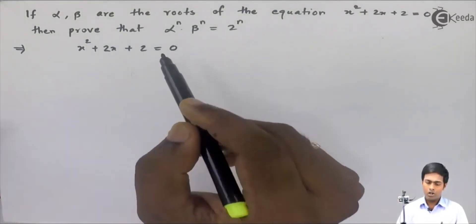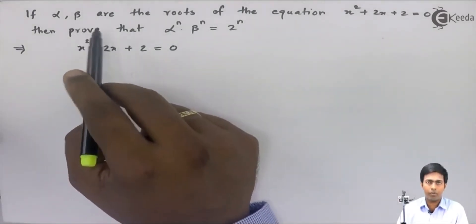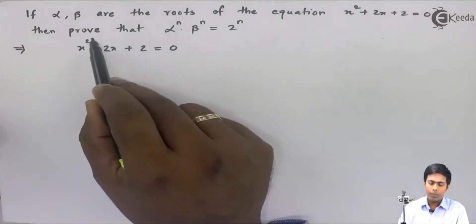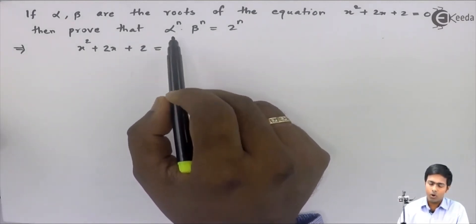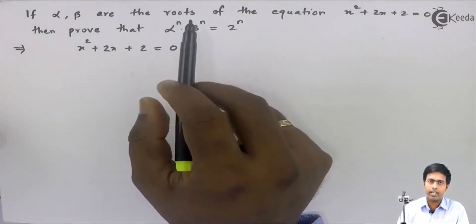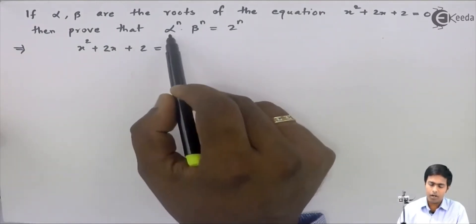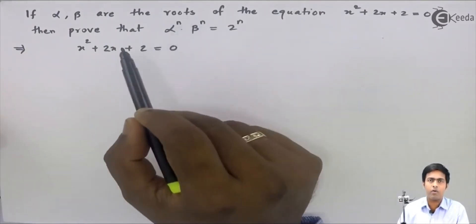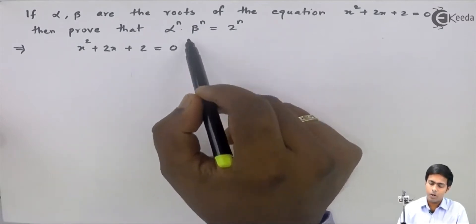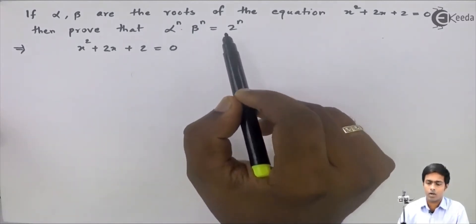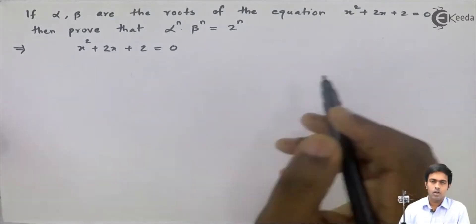We will find the two roots: root one is alpha and root two is beta. Now we start with the left-hand side (LHS) to prove that alpha raised to n into beta raised to n equals 2 raised to n.